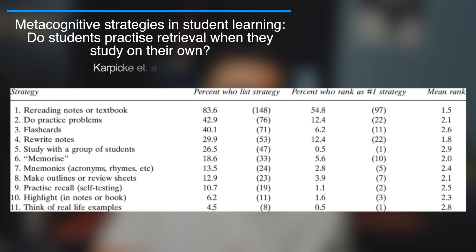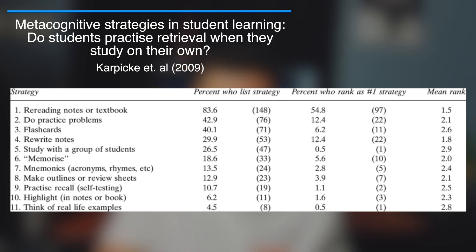Another method you could attribute to Einstein's study habits is trial and error, or active recall. Active recall is a study method used by actually 1.1% of the population, and research shows that most students who use active recall end up performing the best in their class. So that begs the question: what is active recall, and how can you incorporate it into the way you're actually studying?